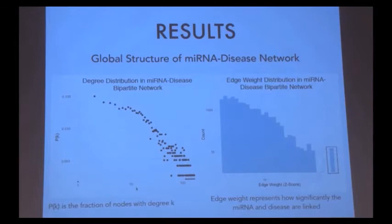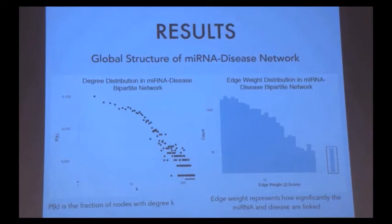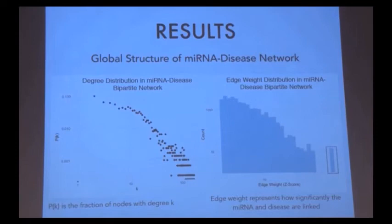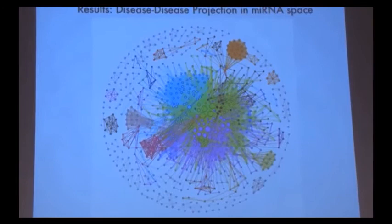Now let's move on to the results of the micro-RNA bipartite disease network. In order to gain a sense of clustering — which tells us the most important micro-RNA disease modules — I calculated edge weight and degree distributions. In the degree distribution, you can see that the distribution follows the power law, meaning the network is a scale-free network. This means the network will be characterized by distinctive clustering, which will tell us the micro-RNA disease modules. The edge weight distribution shows a small minority of edges with a very high weight, indicating a strong micro-RNA-to-disease association.